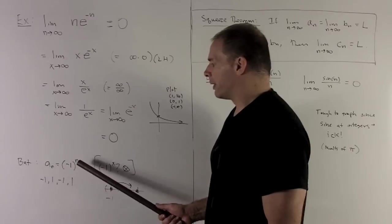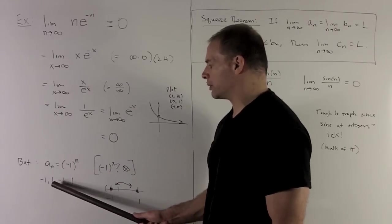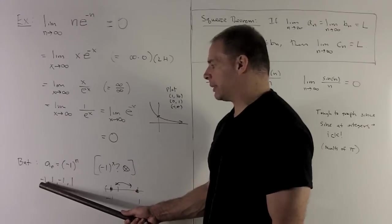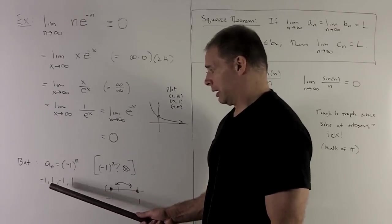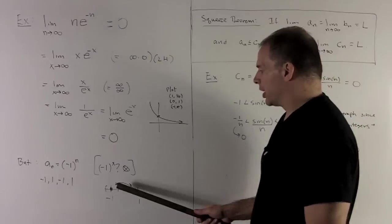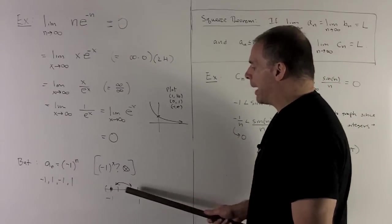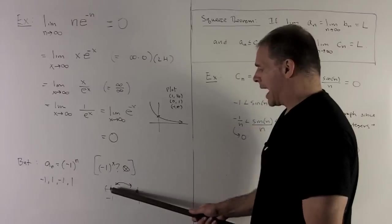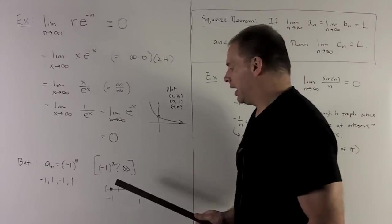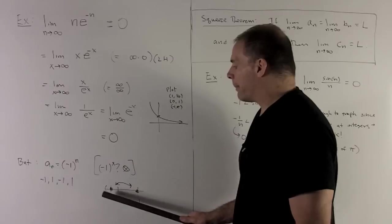So if I put a 1 in, I get a minus 1. A 2 gives me a 1. 3 gives me a minus 1. So the idea is the odds will give me minuses. The evens will give me 1s. And so let's see what the picture's doing. Well, we're going to just bounce back and forth between minus 1 and 1.